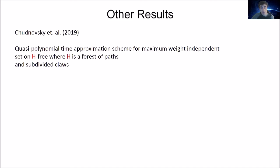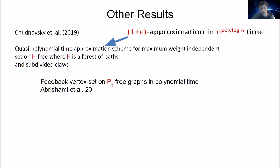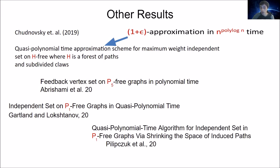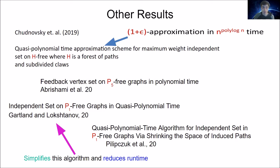Chudnovsky et al. in 2019 gave a quasi-polynomial time approximation scheme for maximum weight independent set on H-free graphs where H is a forest of caterpillars and subdivided claws — a one-plus-epsilon approximation. Feedback vertex set on P5-free graphs was solved by Abrishami et al. in 2020. Independent set on P_t-free graphs was solved in quasi-polynomial time by Gartland and Lokshtanov in 2020, followed by another quasi-polynomial time algorithm by Pilipczuk, Pilipczuk, and Rzążewski — the other three authors of this paper — who simplified the algorithm and reduced the runtime. This second algorithm is the starting point for today's presentation.